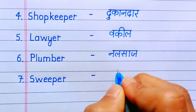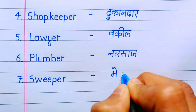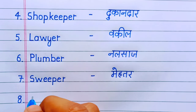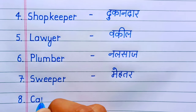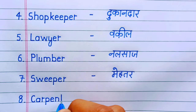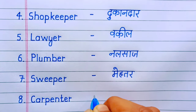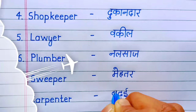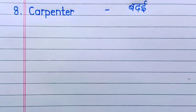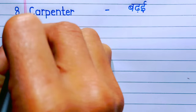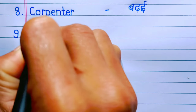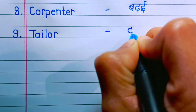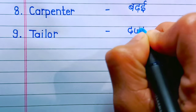Number seven: sweeper. Sweeper means Mahatar. Number eight: carpenter. Carpenter means Badai. Number nine: tailor. Tailor means Darji.